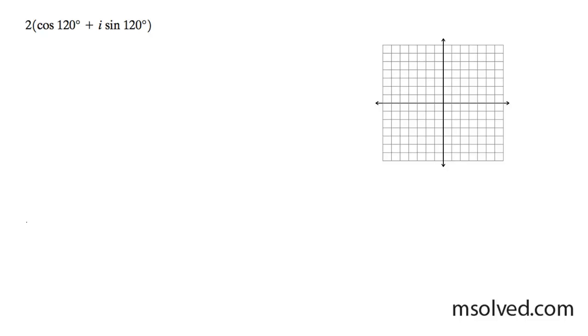We're going to convert 2 times the cosine of 120 plus i sine of 120. So 120 — to get perspective here, let's think in terms of the unit circle — 120 is approximately right here.